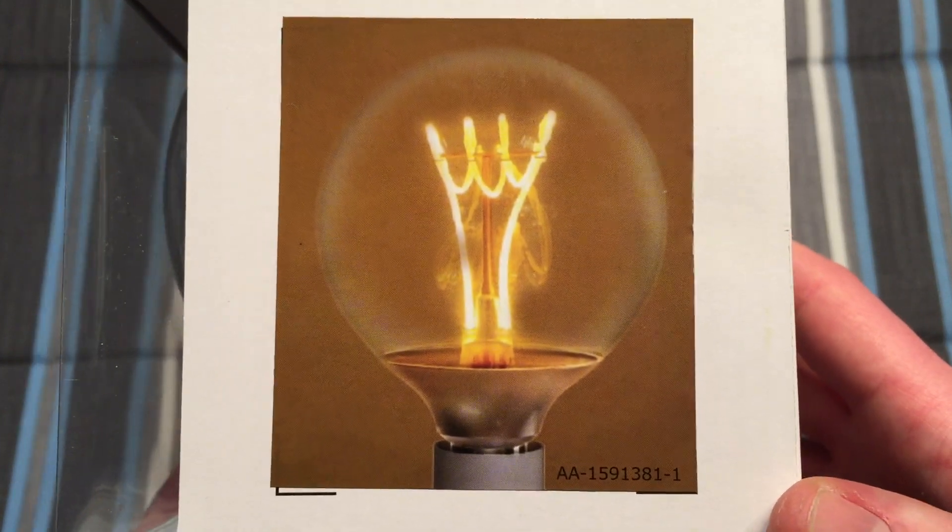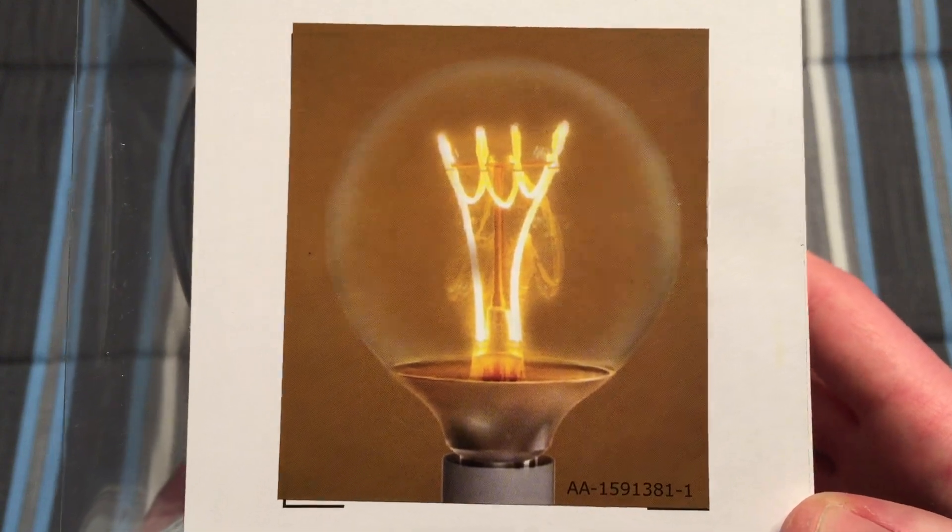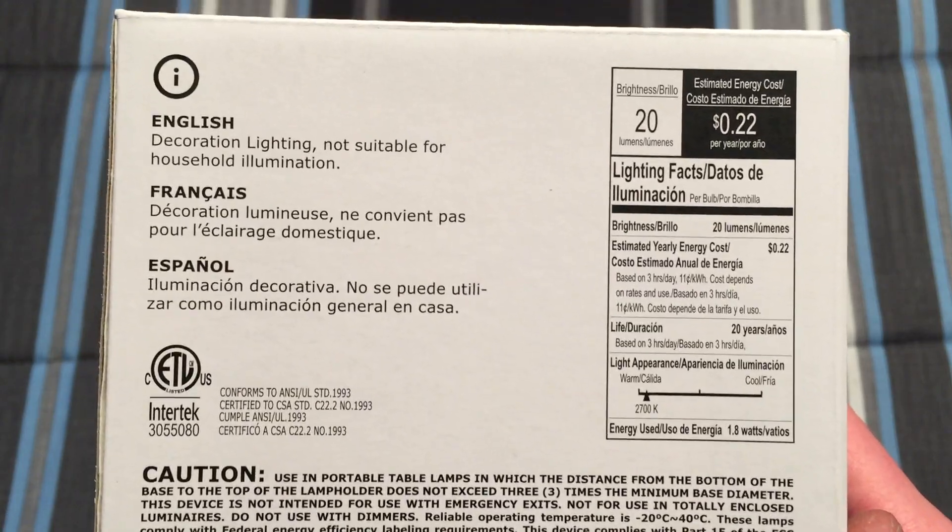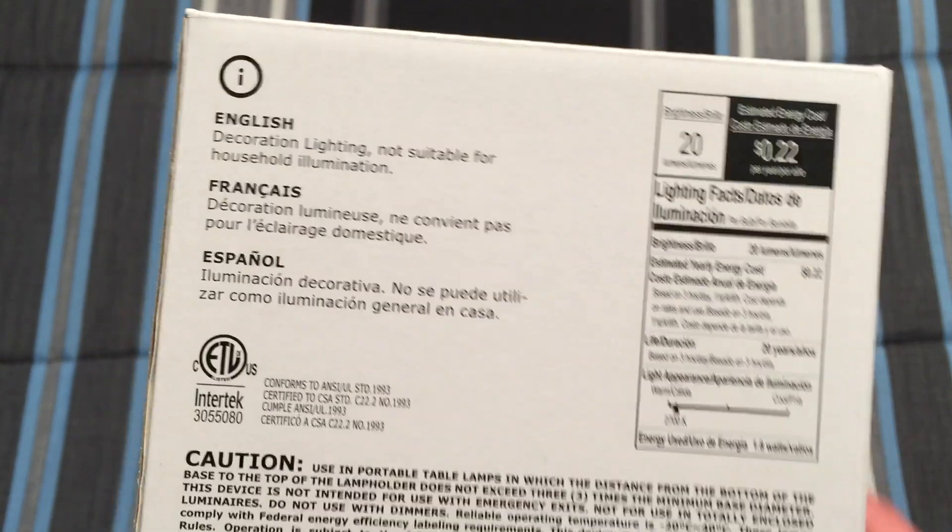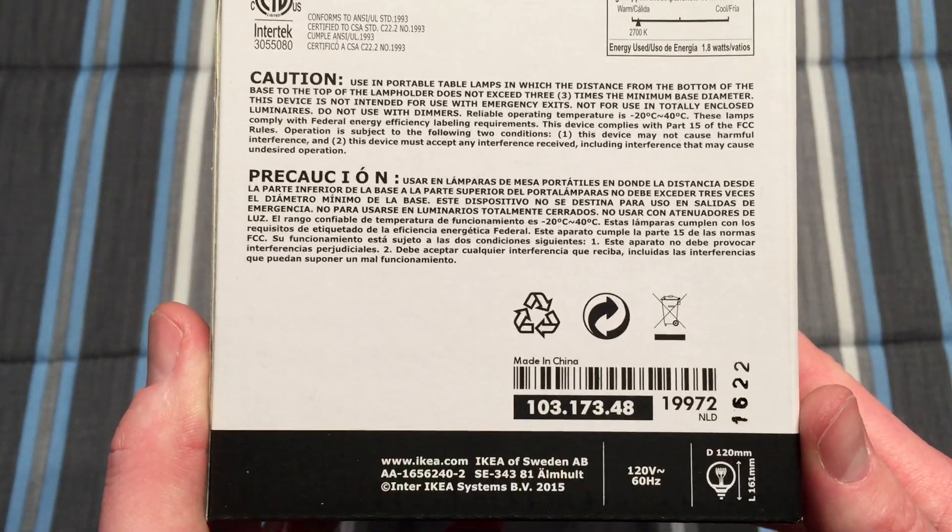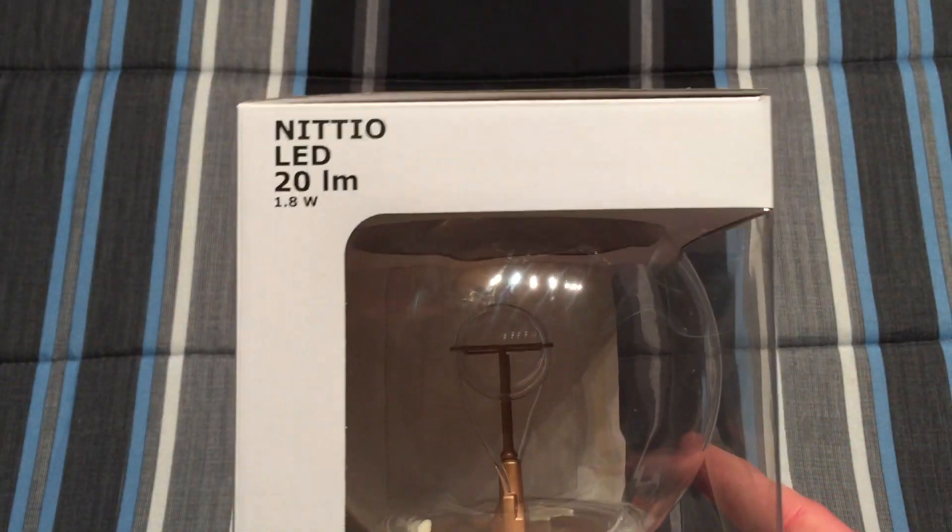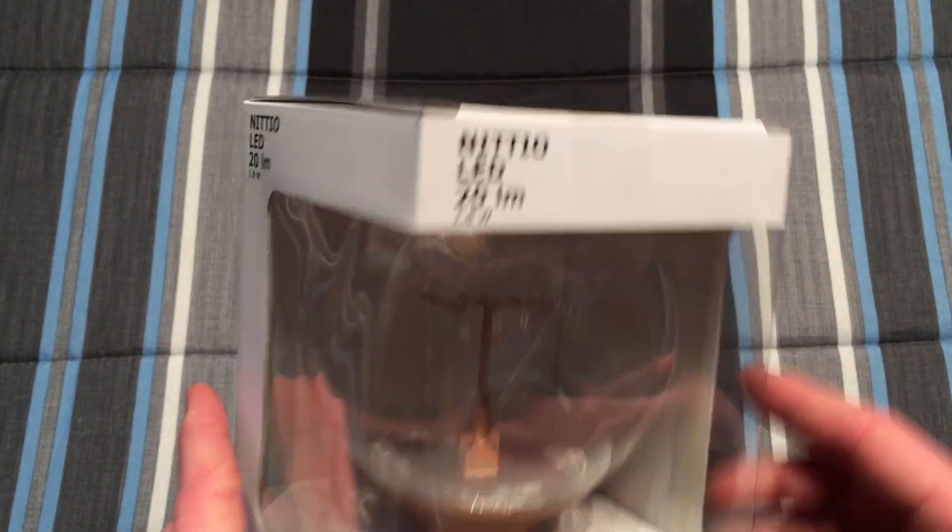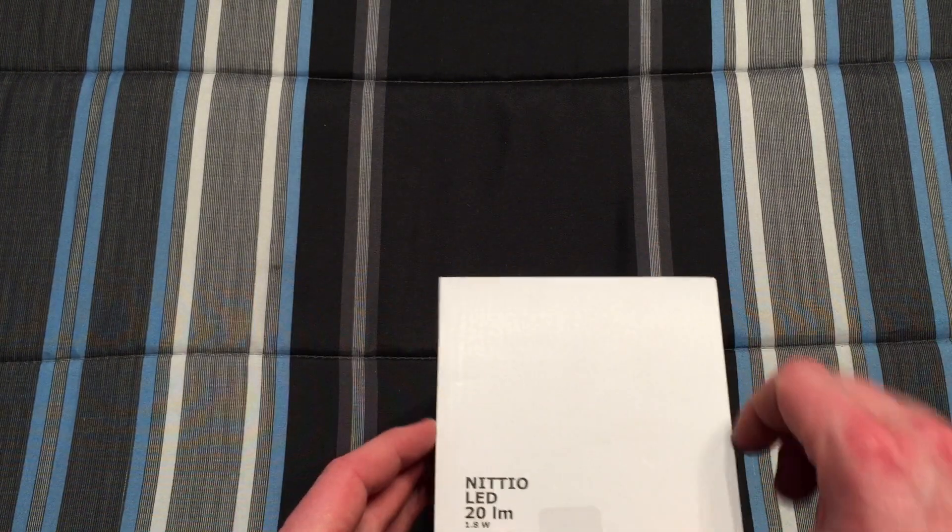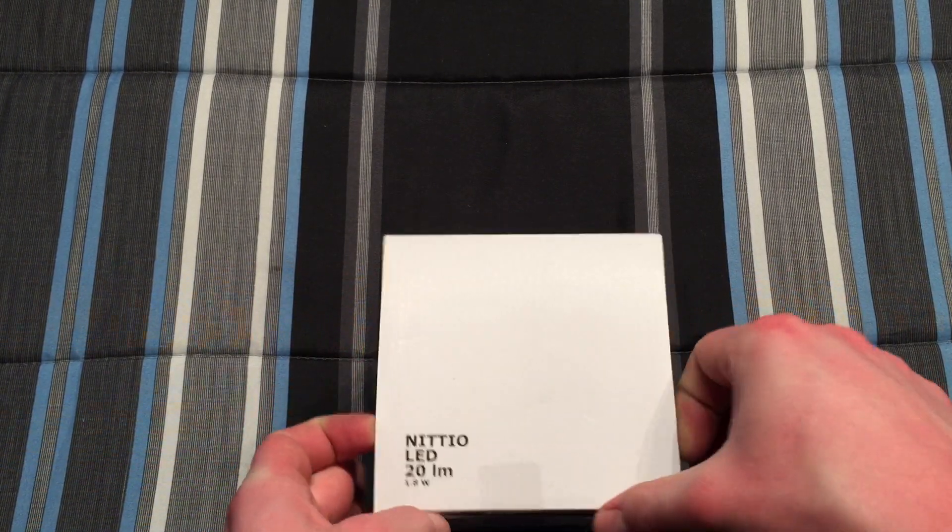On the side here we have an example of what it would look like on. On the back we have some basic information that is required. And the side is yet another profile view of the bulb itself. So let's go ahead and open it up.